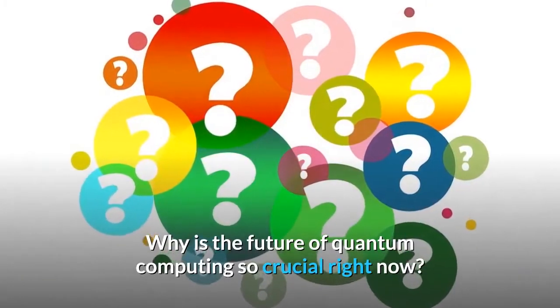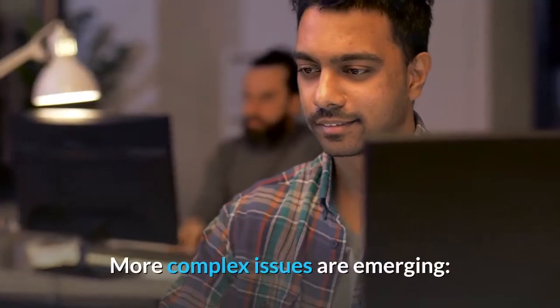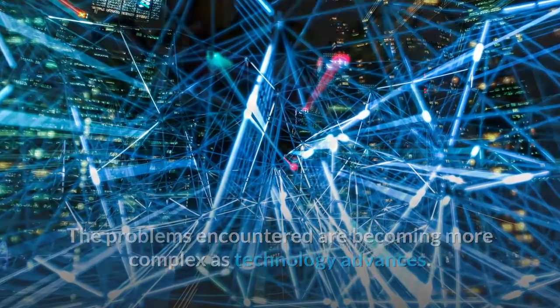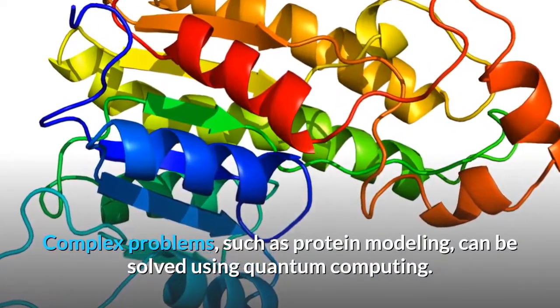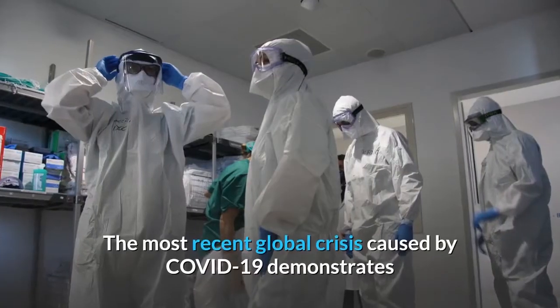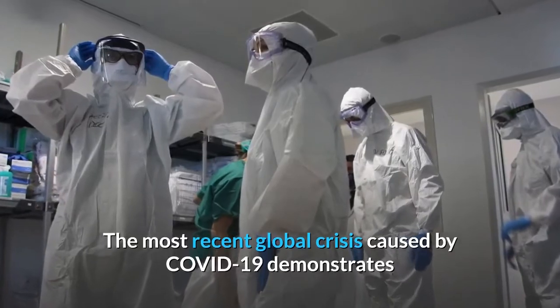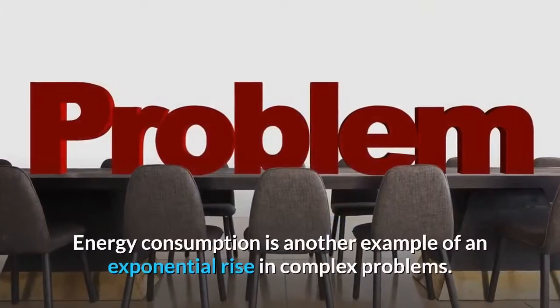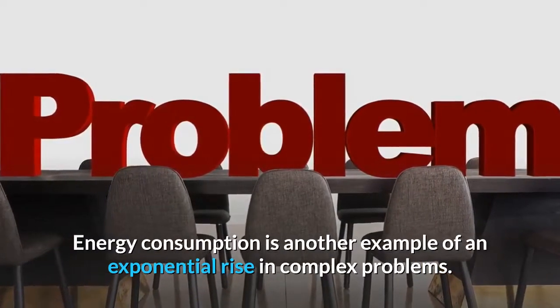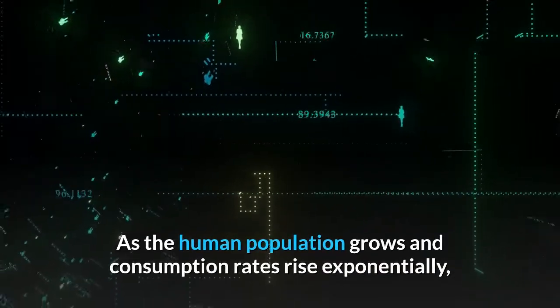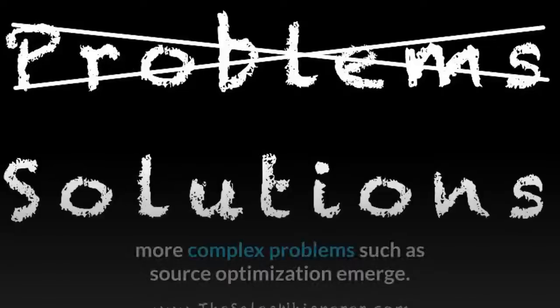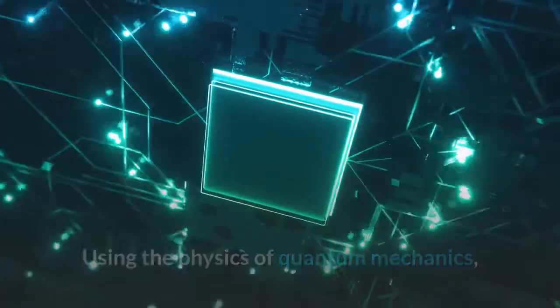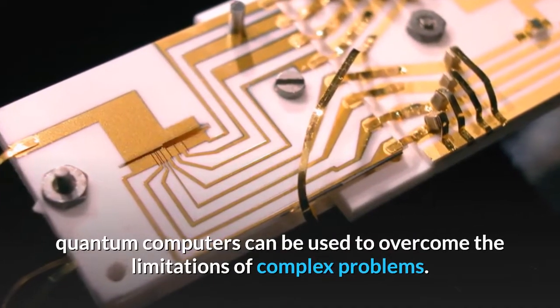Why is the future of quantum computing so crucial right now? More complex issues are emerging. The problems encountered are becoming more complex as technology advances. Complex problems, such as protein modeling, can be solved using quantum computing. The most recent global crisis caused by COVID-19 demonstrates that scientists require a different tool to model and deactivate a single protein. Energy consumption is another example of an exponential rise in complex problems. As the human population grows and consumption rates rise exponentially, more complex problems such as source optimization emerge. Using the physics of quantum mechanics, quantum computers can be used to overcome the limitations of complex problems.